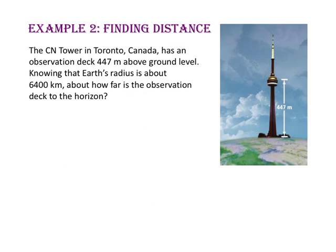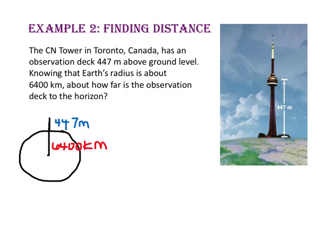In example 2, we will find distance. The CN Tower in Toronto, Canada, has an observation deck 447 meters above ground level. Knowing that Earth's radius is about 6,400 kilometers, about how far is the observation deck to the horizon? Let's start by drawing a diagram. Since the radius is in kilometers but the height of the tower is in meters, we're going to convert the height of the tower to kilometers as well. There are 1,000 meters in one kilometer, so the height of the tower is 447 meters divided by 1,000, or 0.447 kilometers.